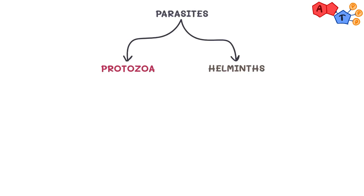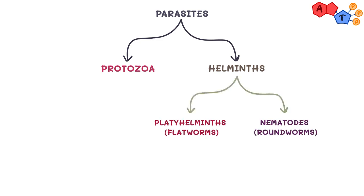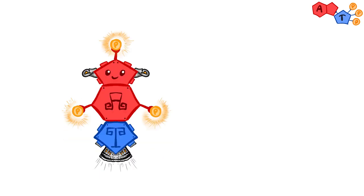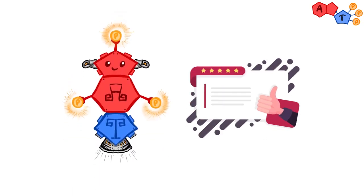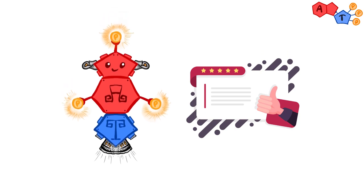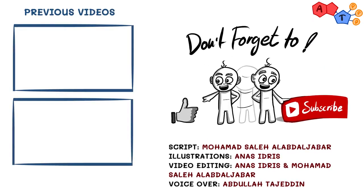To summarize: parasites are classified into protozoa and helminths. Today we started talking about helminths, dividing them into platyhelminths and nematodes. Platyhelminths were the target of today's video, and they were further divided into cestodes and trematodes. In the next video, we will talk about nematodes. We hope you enjoyed this video — let us know what you like or dislike so we can improve. We truly appreciate all your feedback. Don't forget to like and subscribe to receive our latest explanations, and thanks for watching.